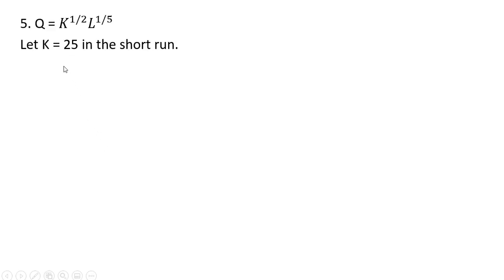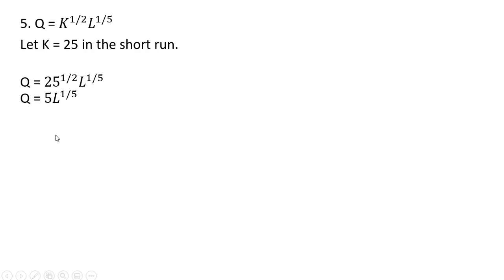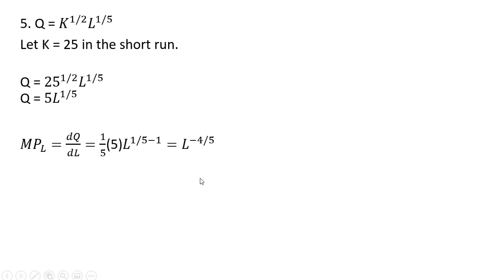Here's another example where we make K present, but we fix K at 25 in the short run — K doesn't change, it is stuck at 25. Making that substitution and simplifying gives us our short-run production function. Taking the marginal product: the one-fifth comes down in front, one-fifth times 5 leaves us with 1, and dealing with the exponents we have L raised to the negative four-fifths power. We can bring that down into the denominator.